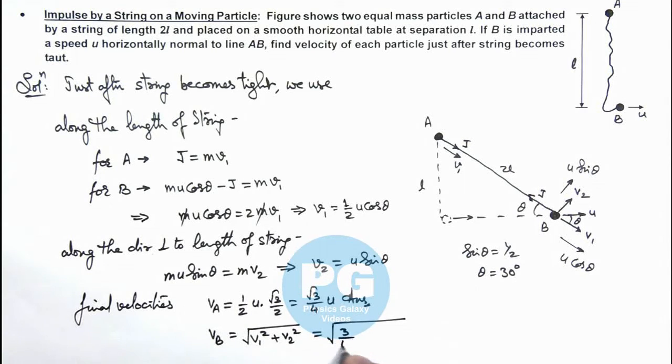This v1 square will be 3 by 16 u square plus v2 square, v2 is u by 2 so this is 1 by 4 u square. So on simplifying this we are getting this as root 7 by 4 u. That is another result of the problem.